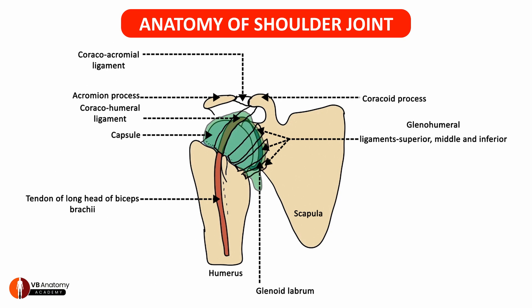Let's colour these as well. Now, taking an orange coloured pen, let's draw a little gap in the capsule here, indicating the point from where the synovial membrane emerges out to form the subscapular bursa.